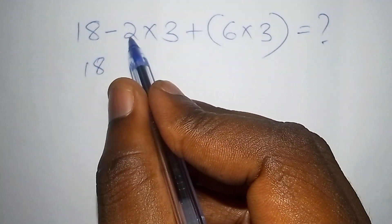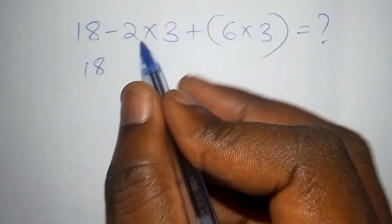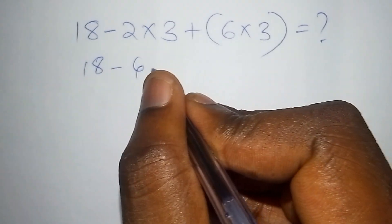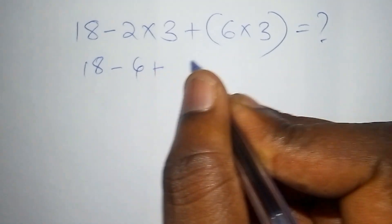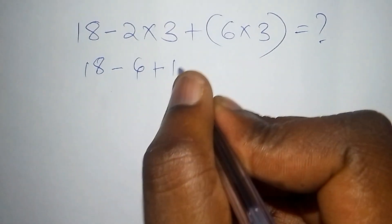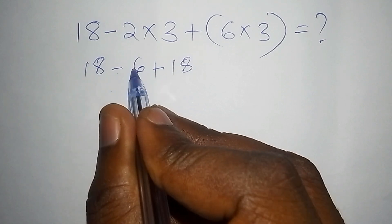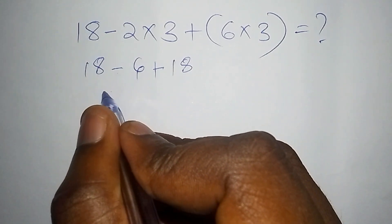This 18, you take 2, minus 2 multiply by 3, then you get minus 6. Then from there, minus 6 add 2, and 6 multiply by 3 is 18. So here we shall have 18 minus 6, 18 minus 6 is 12, then 12 plus 18.